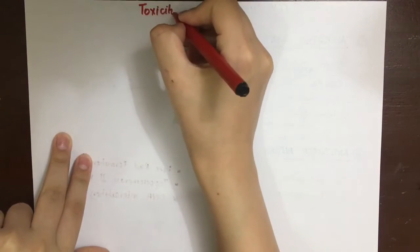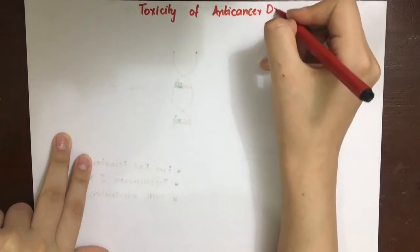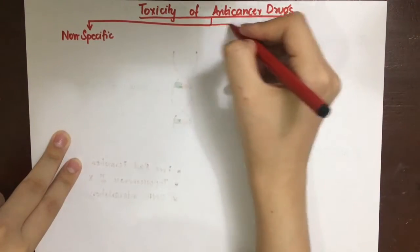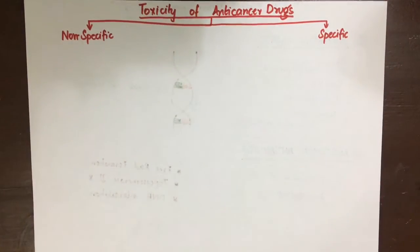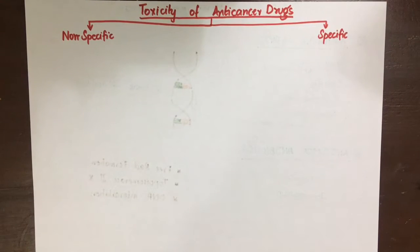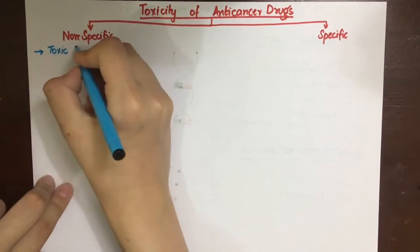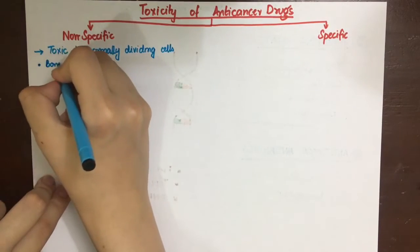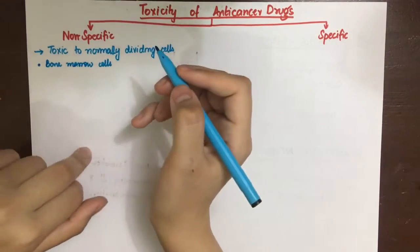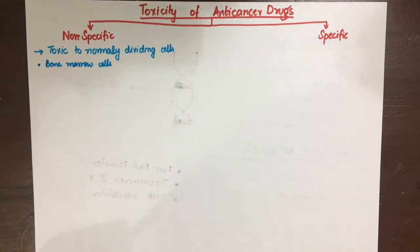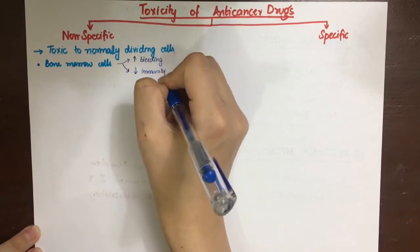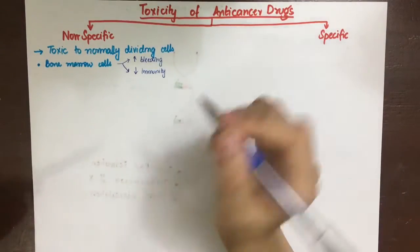Anti-cancer drugs have both non-specific general toxicities and drug-specific toxicities. The first non-specific toxicity is damage to normal rapidly dividing cells. Bone marrow cells are affected, leading to leukopenia, agranulocytosis, thrombocytopenia, and aplastic anemia, which cause increased bleeding and decreased immunity.